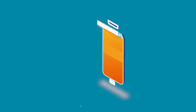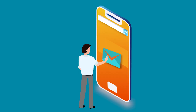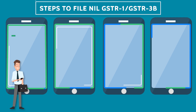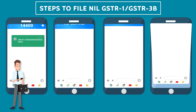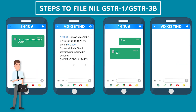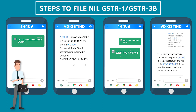In case of outward or inward supplies or any other liabilities in a particular tax period being nil, taxpayers can file nil Form GSTR-1 or nil return in Form GSTR-3B through SMS.